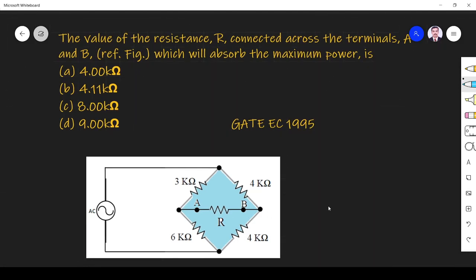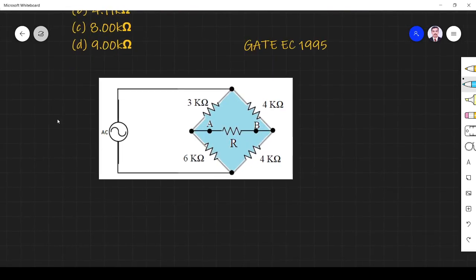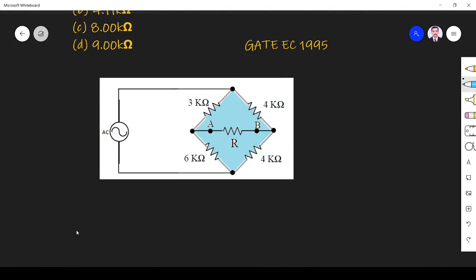So they ask what is the value of R, this is R which is connected across A and B, to absorb maximum power. We know that whenever you want to find R which absorbs maximum power, the resistance value which absorbs maximum power is nothing but R Thevenin.